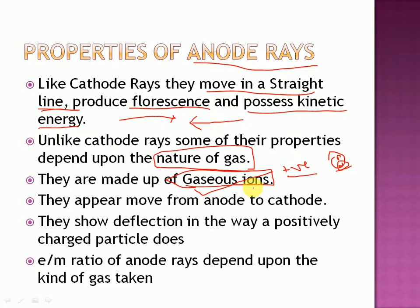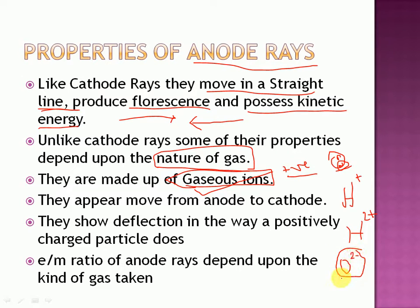So anode rays are called gaseous ions. What are gaseous ions? When gases lose or gain some of their electrons, it is called a gaseous ion. For example: H⁺ is a gaseous ion, He⁺ or He²⁺ is also a gaseous ion, and O²⁻ is also a gaseous ion. So gaining or losing of electrons by gases forms a gaseous ion. In case of cathode rays, they move from cathode towards the anode. In case of anode rays, they move from anode towards the cathode.